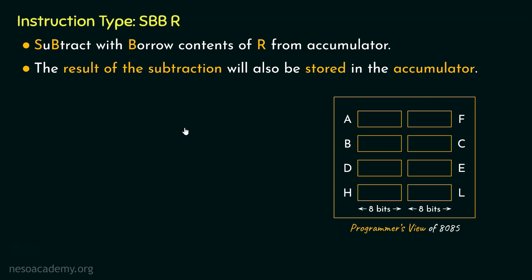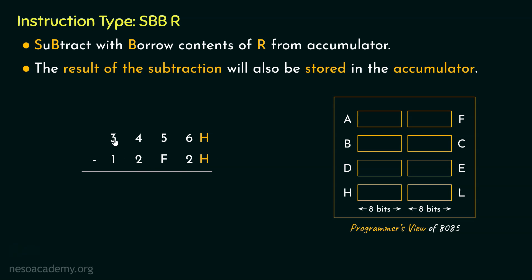You must be wondering: we understand subtract contents of R from accumulator, but what is this 'with borrow'? To make you understand this, let me give you an illustration. We may come across situations where we need to perform subtraction involving multiple bytes. Say we would like to subtract 12F2 from 3456. These are both hexadecimal 4-digit numbers, which are 16 bits each in binary — so clearly, this is 2 bytes each.